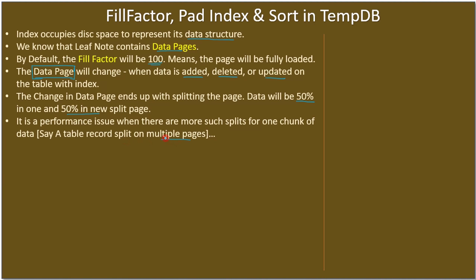It's a performance issue when there are more such splits for one chunk of data — say a table record splits across multiple pages. It happens when there are more additions, deletions, and updates. For example, this data page is fully packed with records. It is a leaf node for the data structure, and with a default fill factor of 100, when modification or update expands the data, this page will be split into two pages.